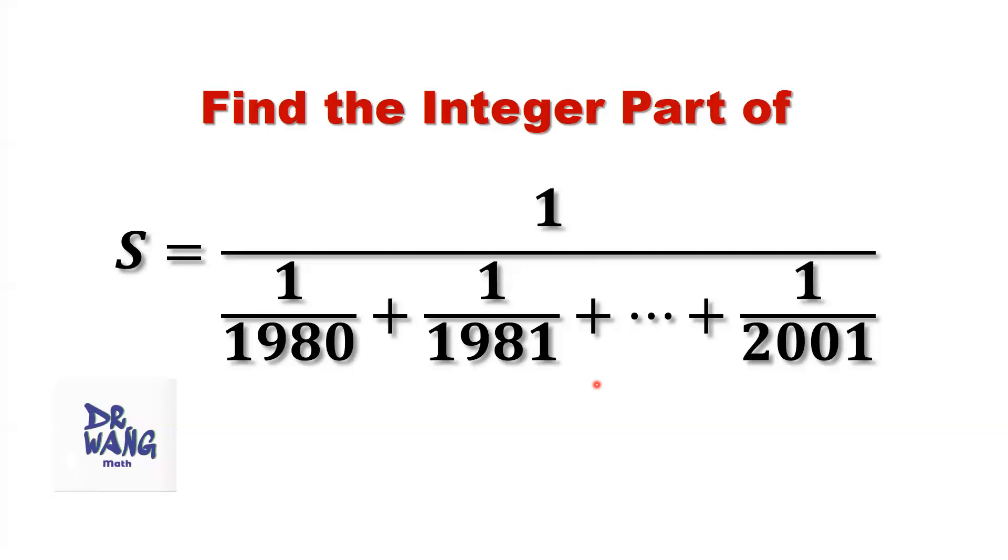Here are two questions for you. From the sum of the denominator, which term is the largest term? Which term is the smallest term? The first term, 1 over 1980, is the largest term because it has the smallest denominator, 1980.